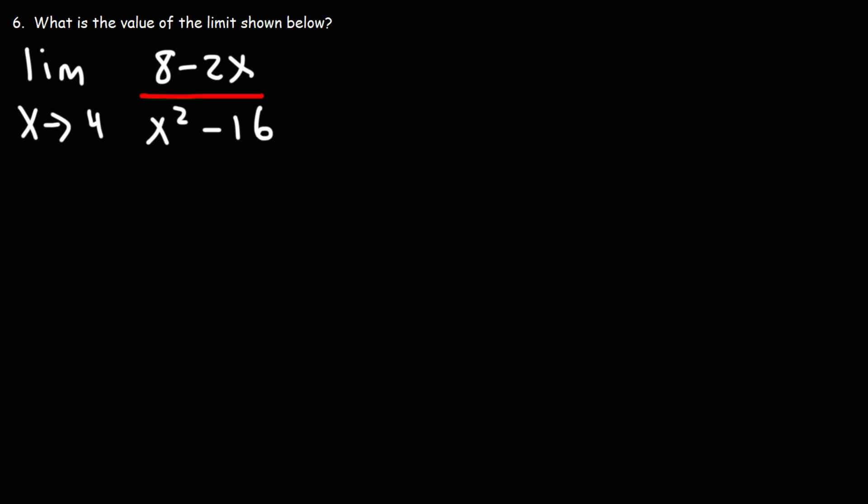So let's see what we can factor. In the numerator, notice that we can factor a two. Eight divided by two is four, and negative two x divided by two is negative x.